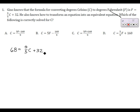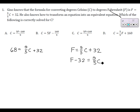Everyone would agree you'd start by subtracting 32 and then multiplying by 5/9. That's what we're going to do here, but instead of having a 68 we're going to have an f. So just like you might subtract 32 on both sides over here, we do that, and then we multiply both sides by five-ninths.